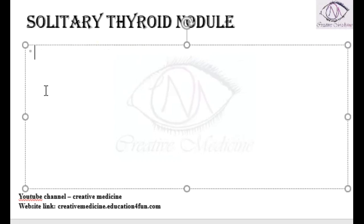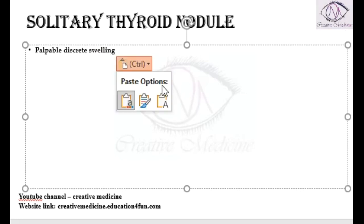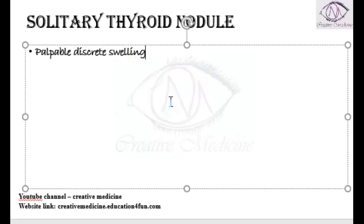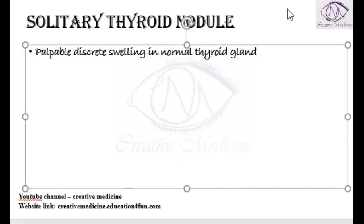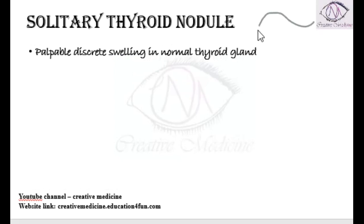Solitary thyroid nodule is an easily palpable discrete swelling which can be palpated in the normal thyroid gland. If we can palpate a small nodule in the normal thyroid gland, then it is a solitary thyroid nodule.